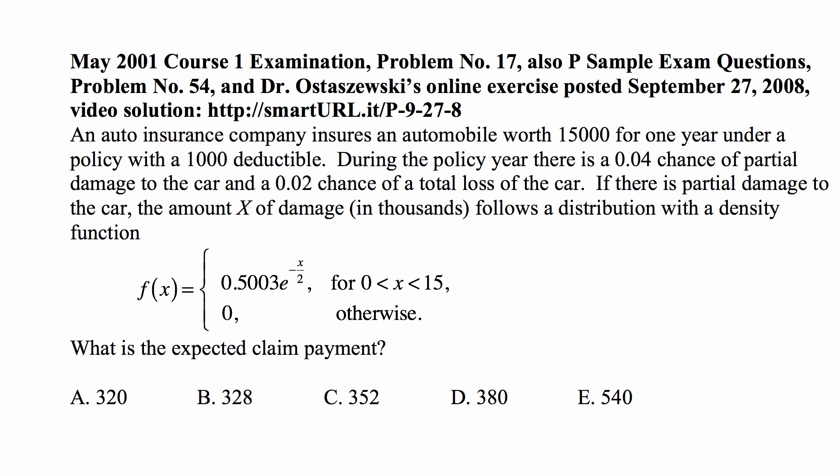If there is partial damage to the car, the amount X of damage in thousands follows a distribution with density function equal to 0.5003 times e to the minus X over 2 for X between 0 and 15, and 0 otherwise. What is the expected claim payment?